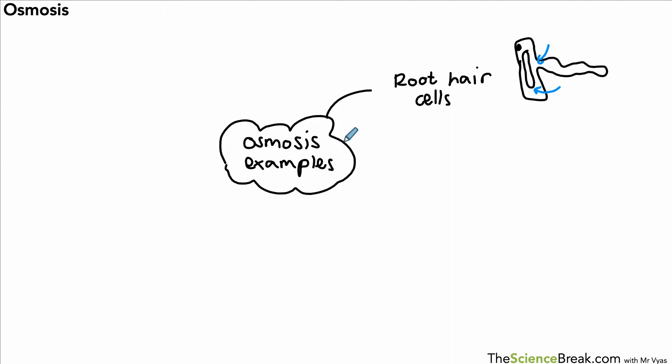We also have other plant cells, and they can be either turgid or not depending on how the water moves. But the turgid ones, where it's fully packed with water, helps to support the plant and keep it upright.